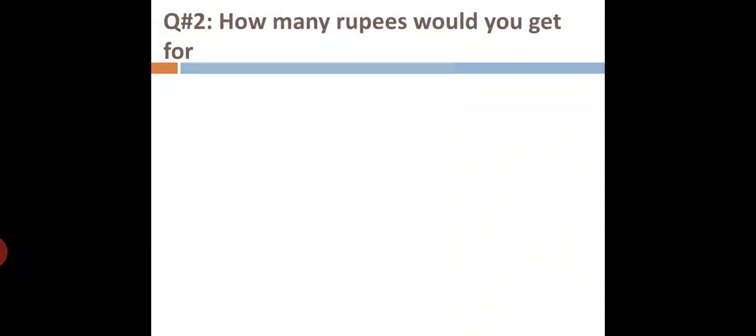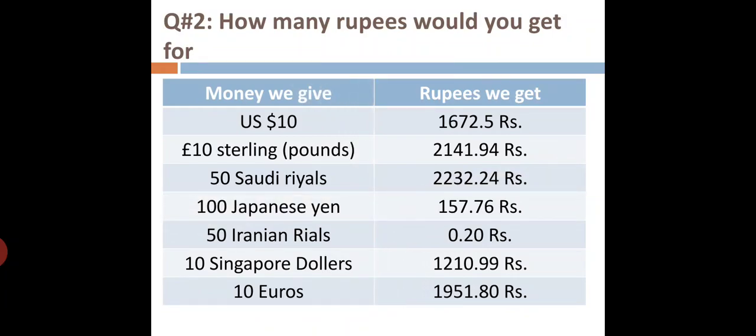Your question number two is: How many rupees would you get for these currencies? For US $10, we will get 1672.5 rupees. For £10 sterling pounds, we will get 2141.94 rupees. For 50 Saudi riyals, we get 2232.24 rupees. For 100 Japanese yen, we will get 157.76 rupees. For 50 Iranian rials, we get 0.20 rupees. For 10 Singapore dollars, we will get 1210.99 rupees. For 10 Euros, we get 1951.80 rupees.